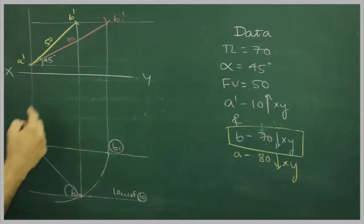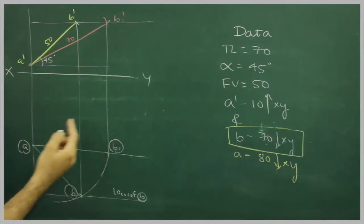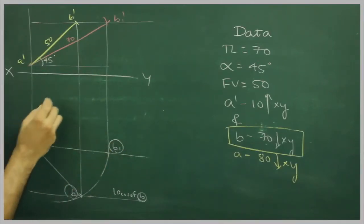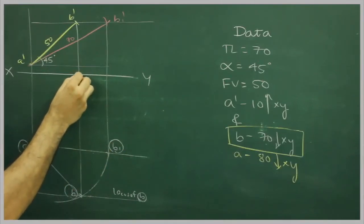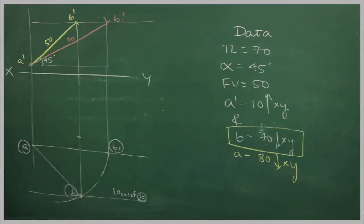Then I will take A to B. Now we will go to our original dimension, we will go to original data, which is 70mm below xy line. So from here, I will go down by 70, I will mark this point as D.